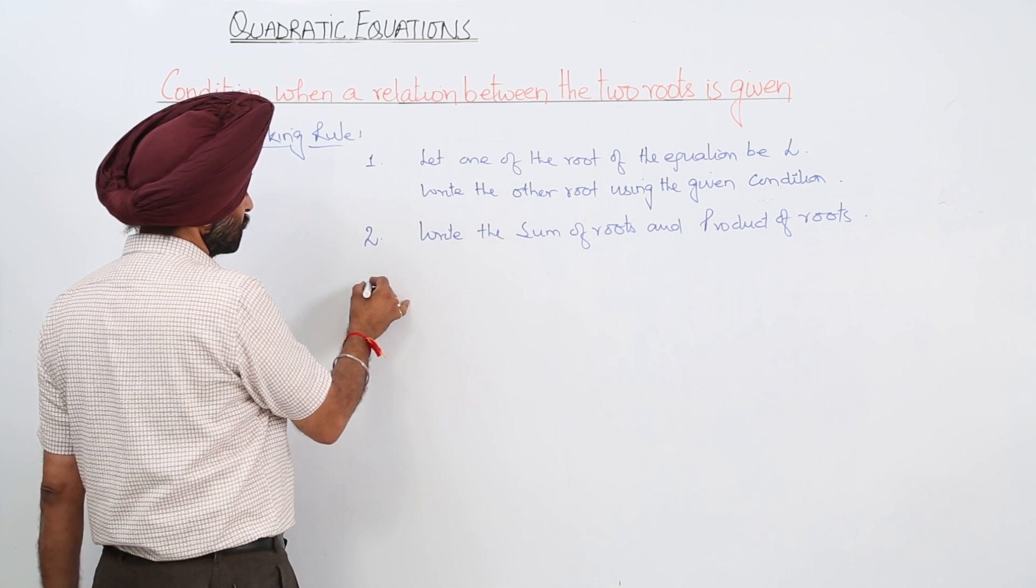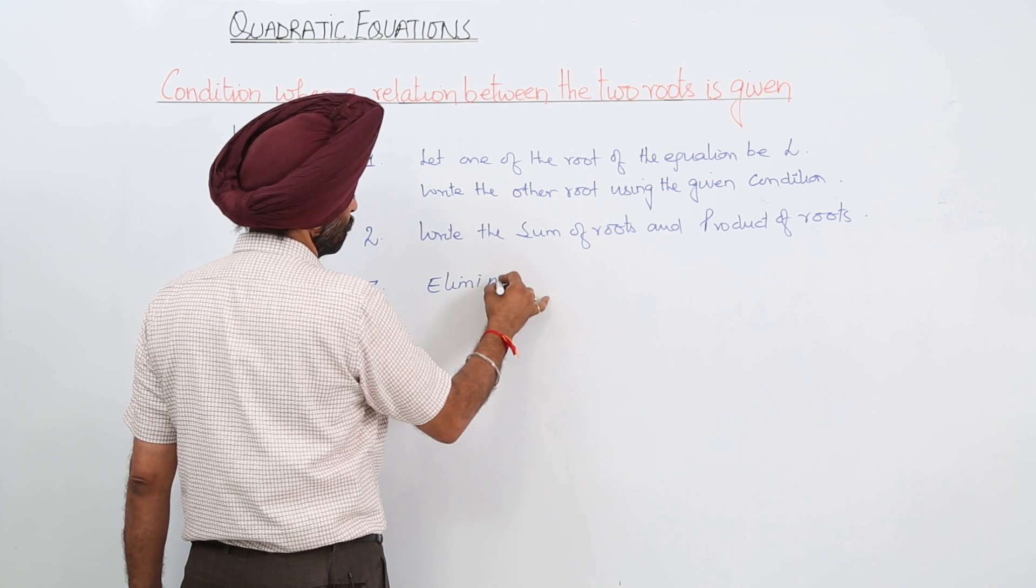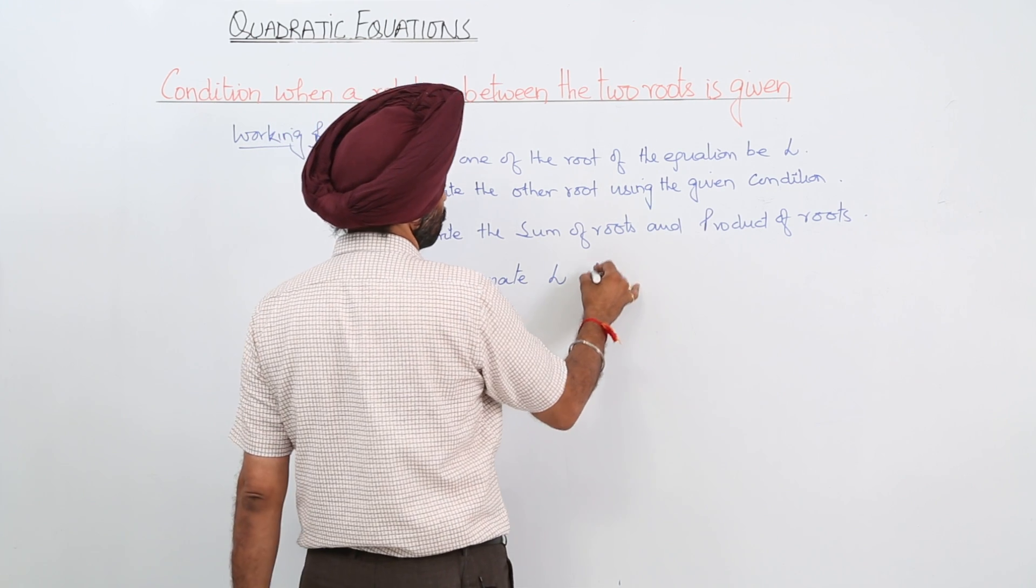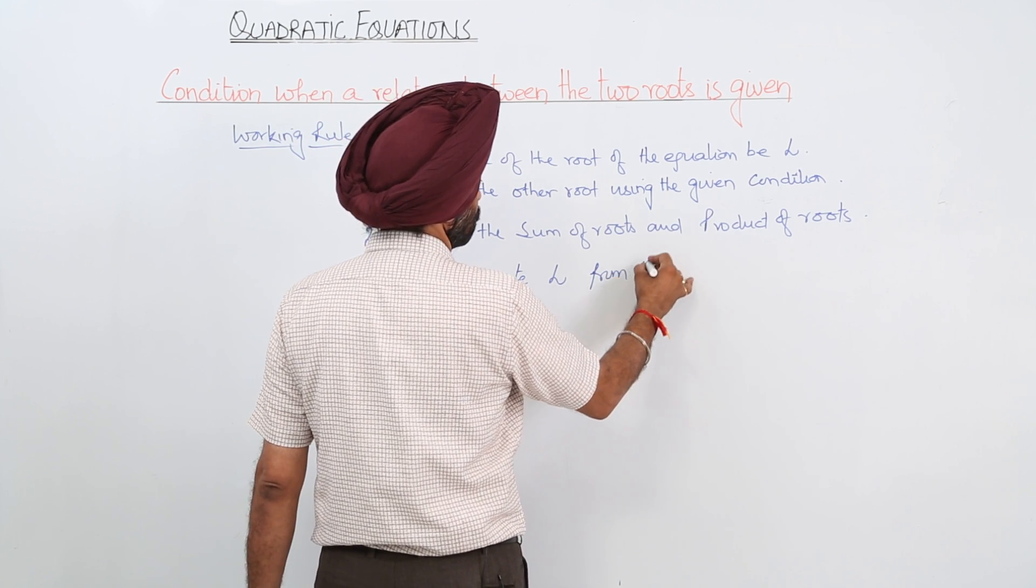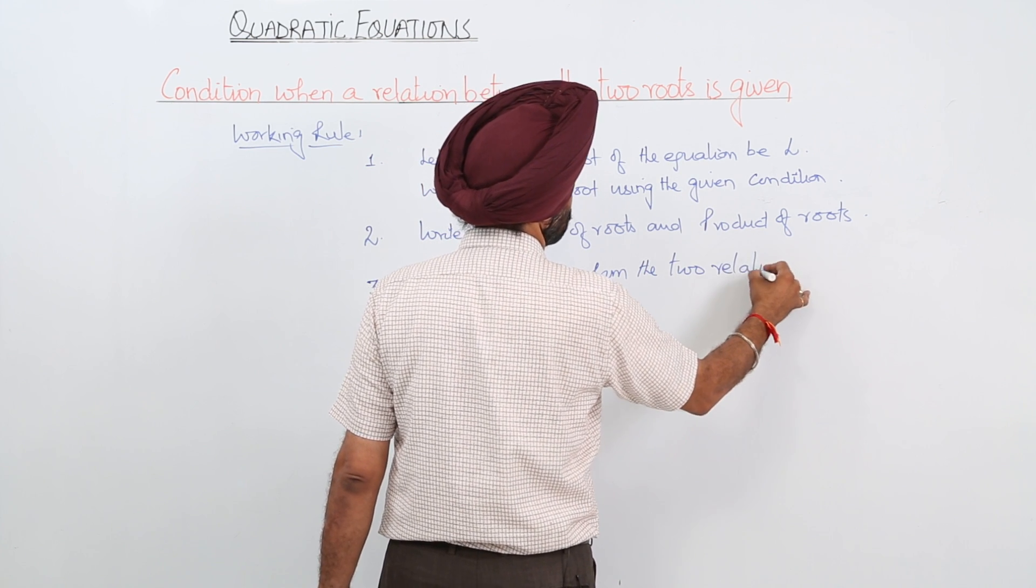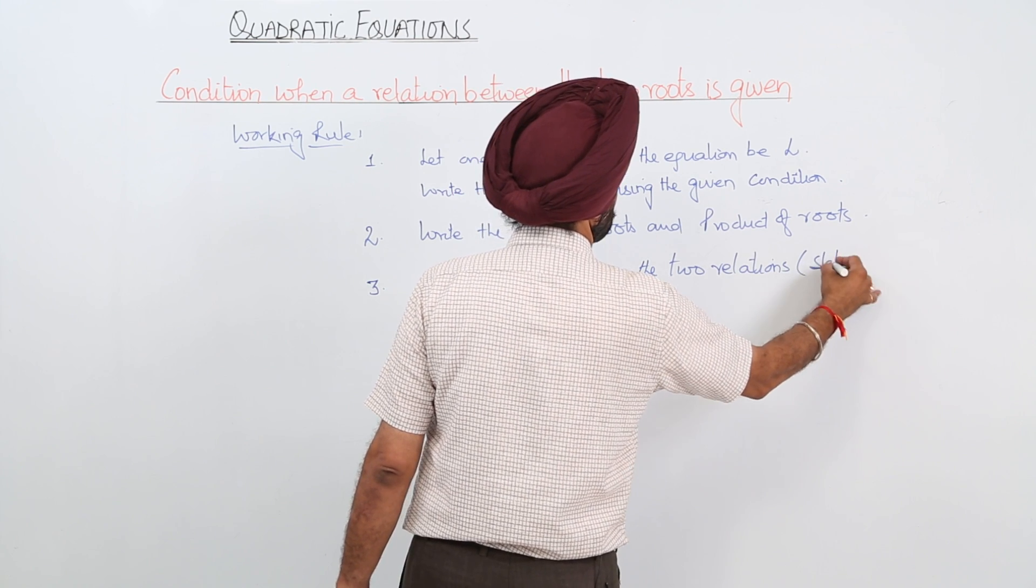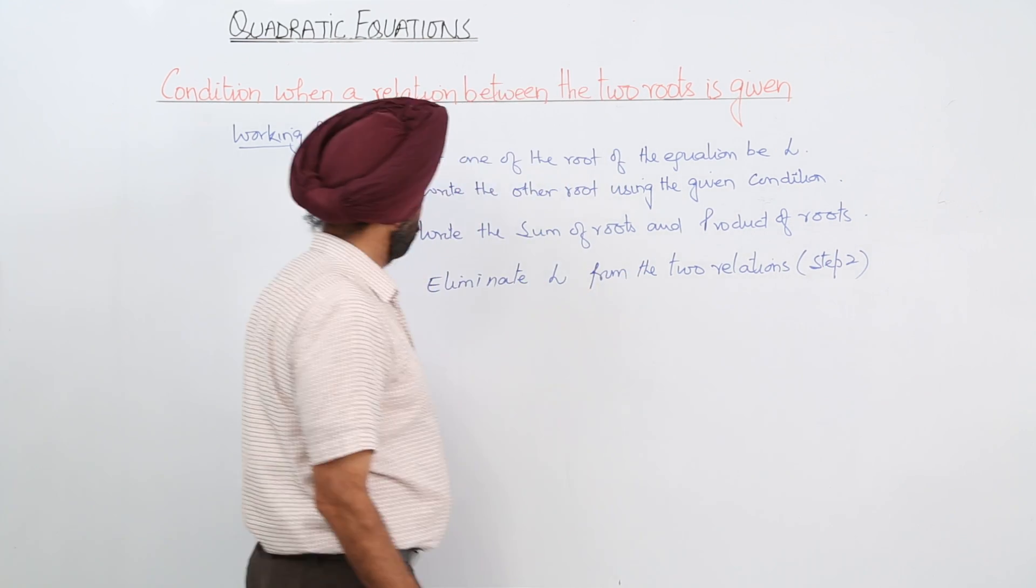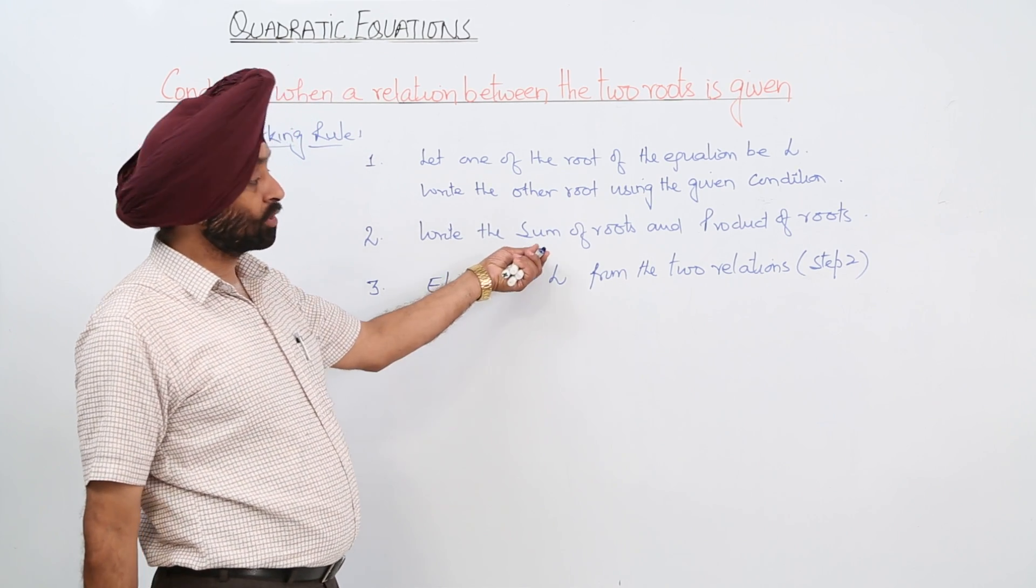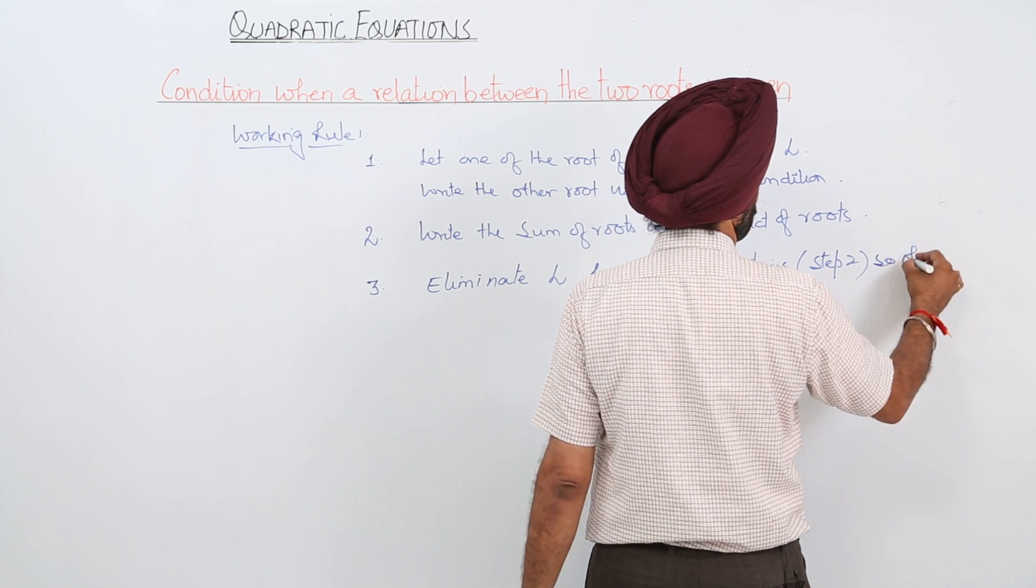Step number 3: Eliminate alpha from the two relations. That is step number 3: from the sum of roots and product of roots so obtained.